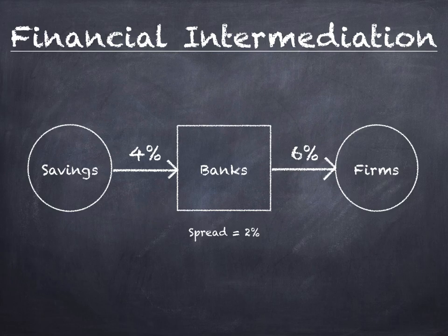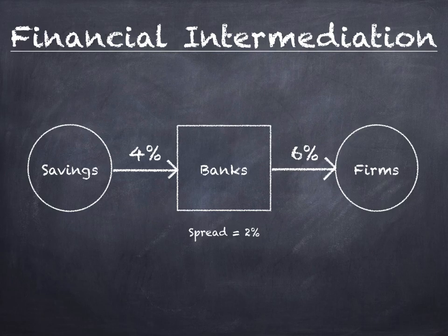To understand how savings are utilized in an economy, you need to understand the process of financial intermediation. This process explains how the entire country's savings are channelized into the economy to make it more productive. Let's suppose the left-hand circle represents the entire savings of our economy — all households have saved this much amount. Now, let's suppose all those savings are deposited into a bank. Saving money in banks provides a return of, let's say, 4%.